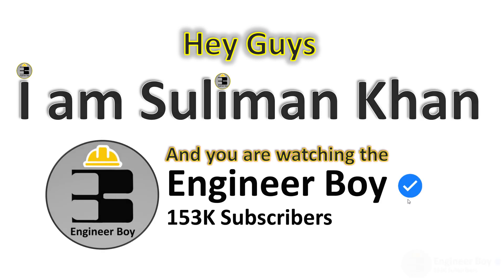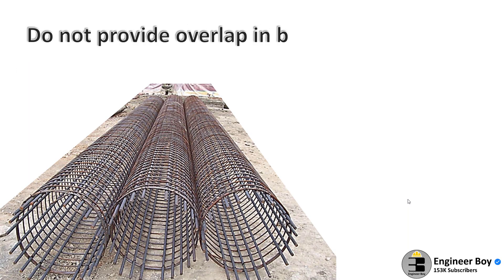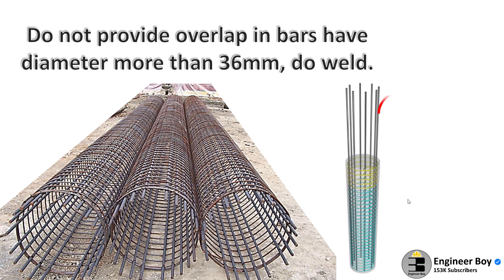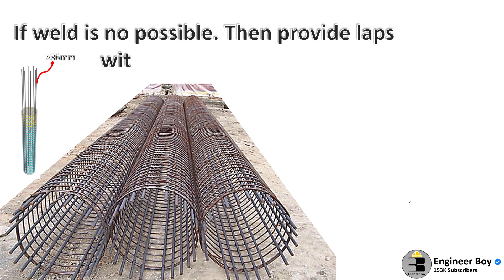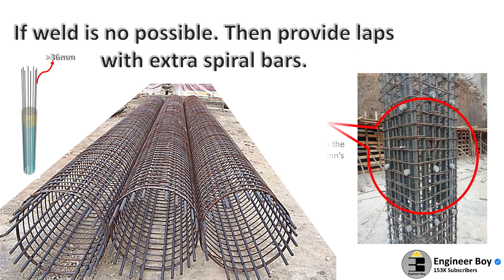Remember, lapping should not be used for bars having diameter more than 36mm. However, when main bars or longitudinal bars of the column are larger than 36mm, then bars may be welded. In situations where welding is not possible, lapping may be permitted and additional spirals should be provided around the lapped bars.